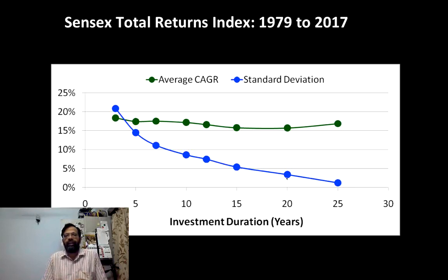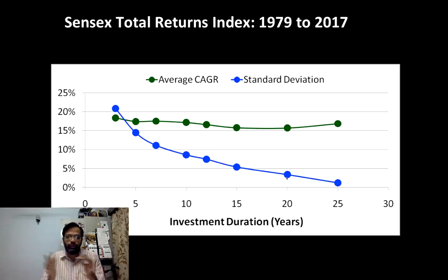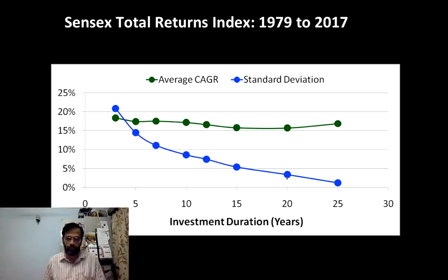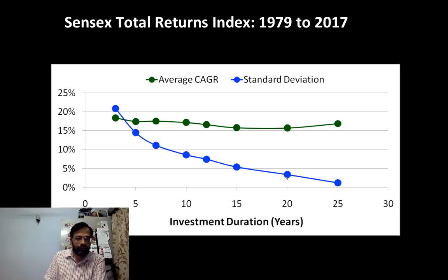If you are lucky, after paying all taxes, to get 10% after 20 years, you should count yourself lucky — that's how I look at it. So this can be used to define what is short-term and what is long-term.